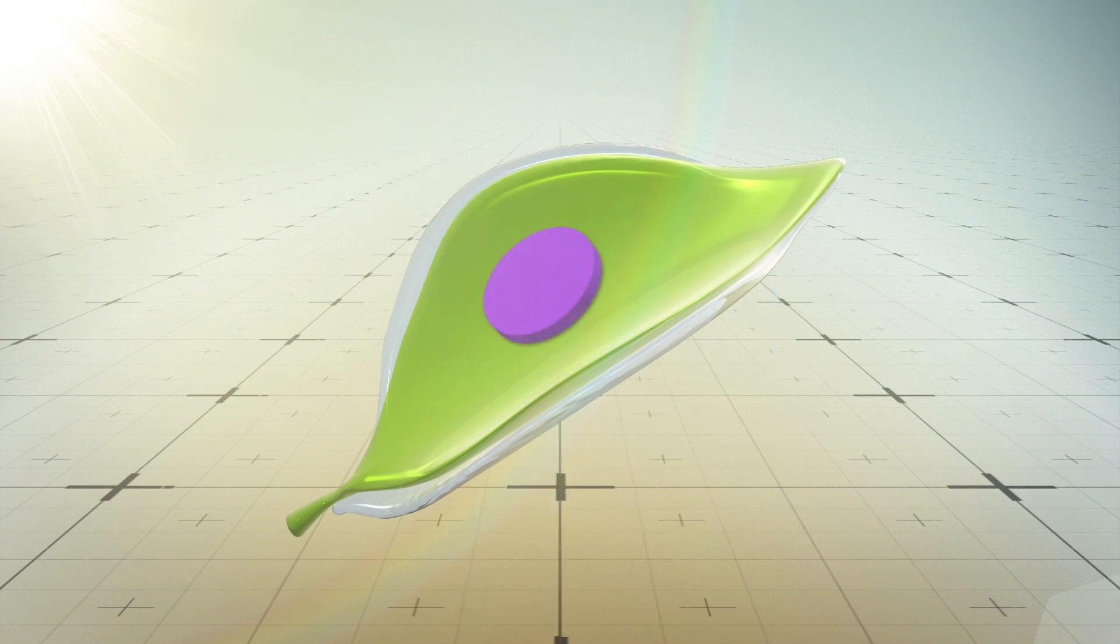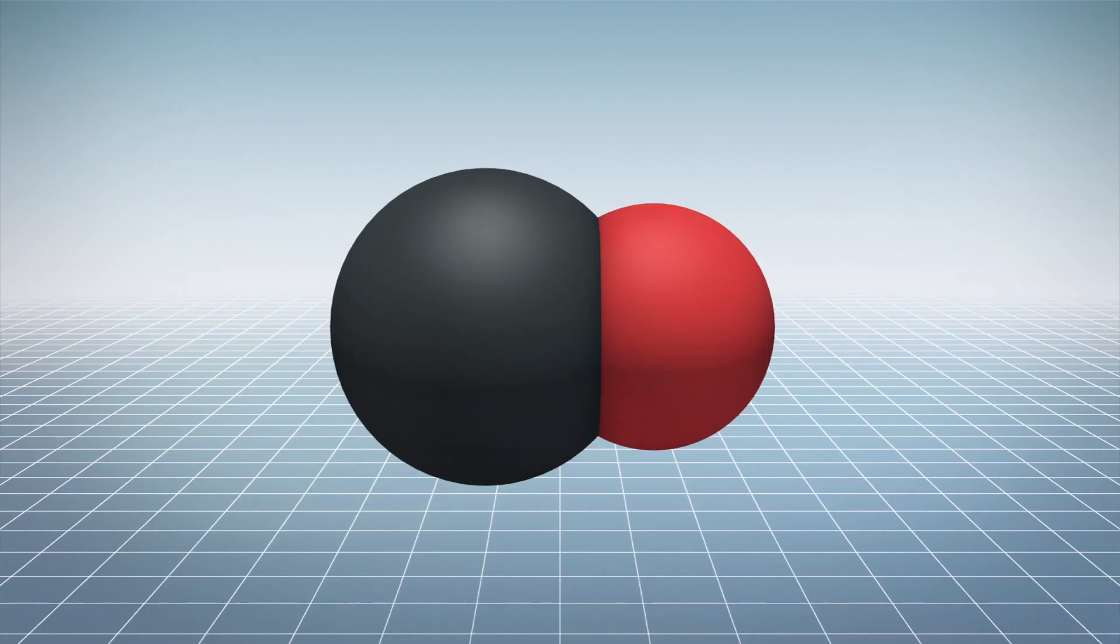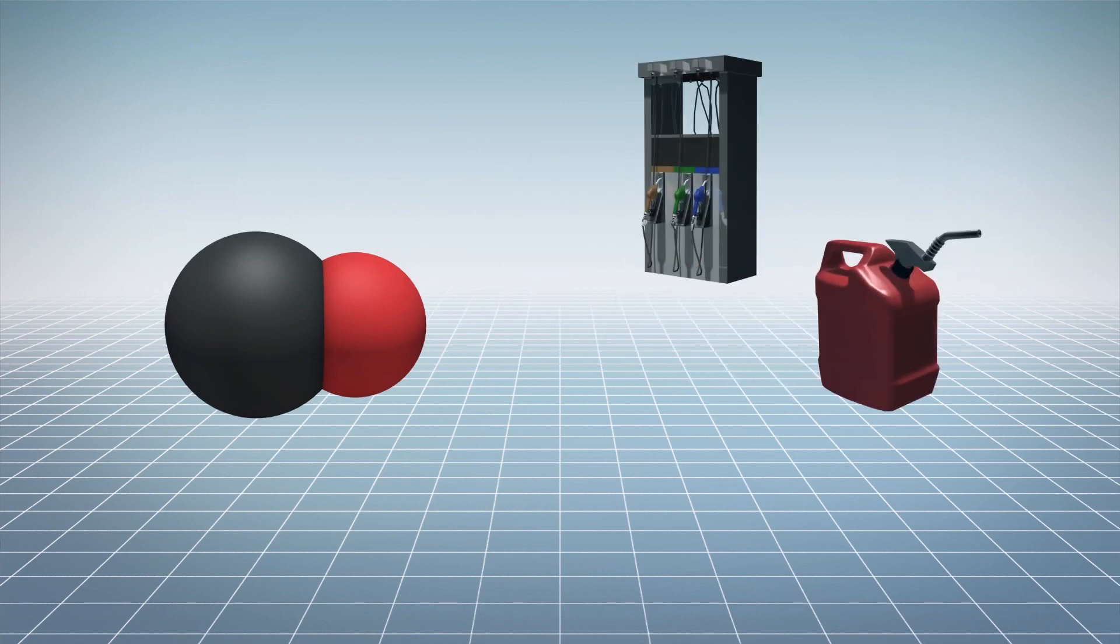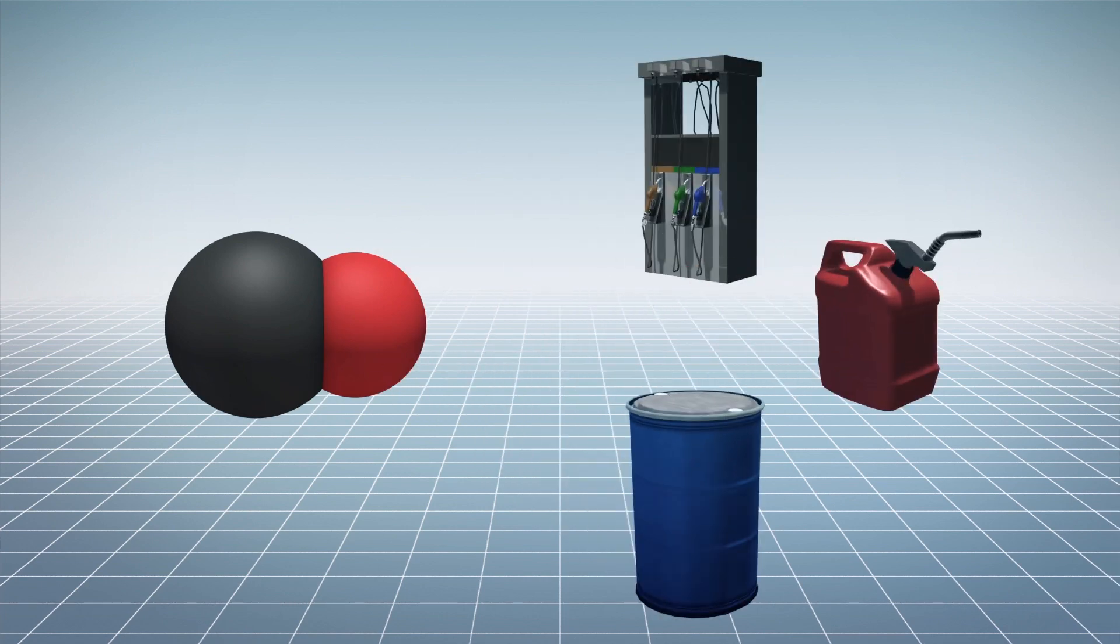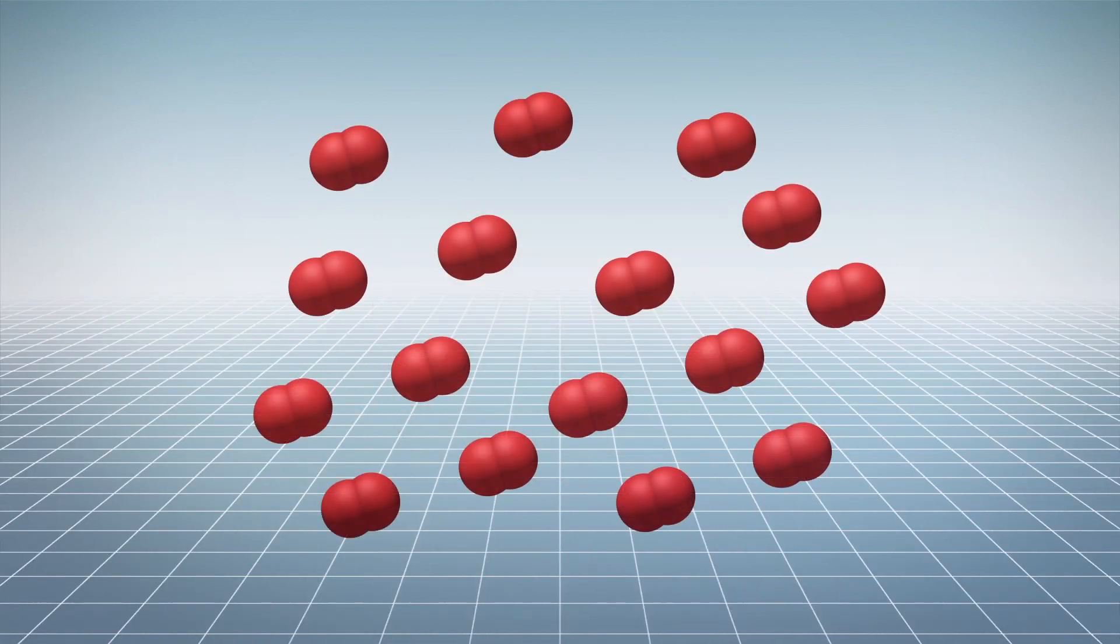An artificial photosystem then converts CO2 to carbon monoxide and oxygen. Carbon monoxide can be used to create various synthetic fuels, including gasoline and methanol. The oxygen can be either collected or released into the environment.